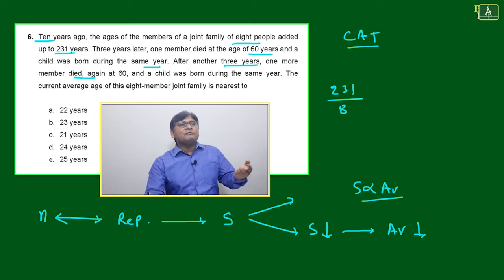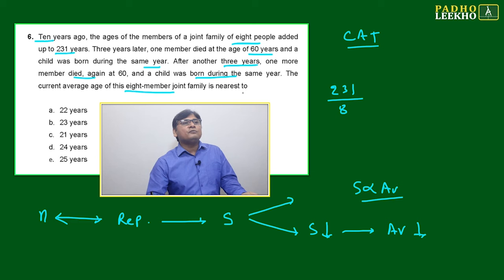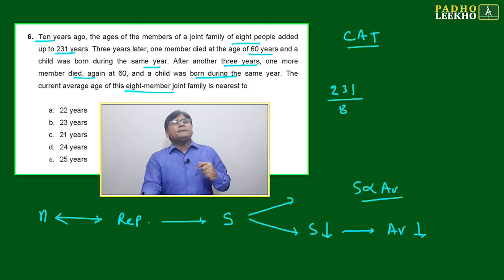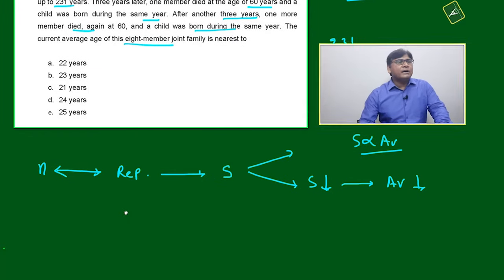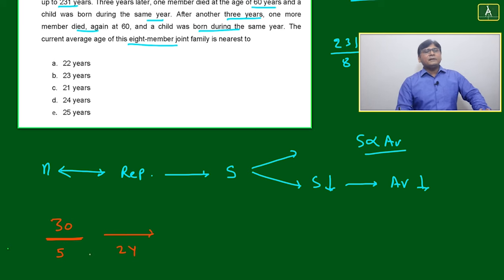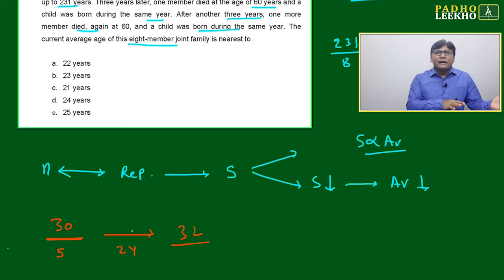Again, same thing happening - after three years, one more member died, another has taken birth during the same year. The current average age of this eight-member joint family is nearest to - they're asking nearest. Another way to look at averages: suppose average is 30 years, maybe five members are there. After two years, all five members will become two years older, average will shoot up by two, average will become 32.